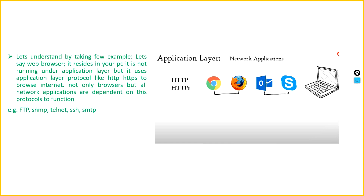Your web browser resides in your PC but runs using application layer protocols like HTTP and HTTPS to browse the internet. Other applications use different protocols too — for example, Outlook uses SMTP. FTP, or File Transfer Protocol, is used to transfer files. Telnet is for remote connectivity, and SSH is a remote shell protocol.